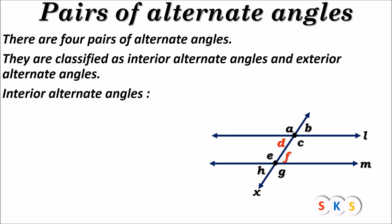Note that the angles should be inside the parallel lines and they should be cross angles. You can see angle D and angle F are cross angles. So, angle D and angle F is the first pair of interior alternate angles. Angle C and angle E is another pair of interior alternate angles.